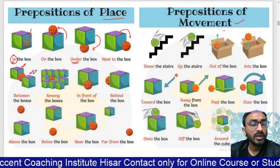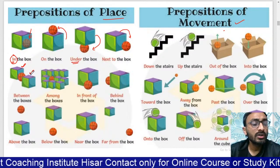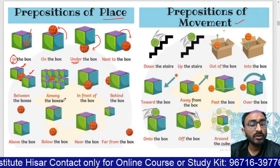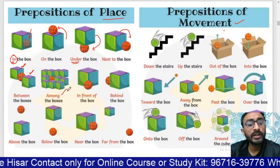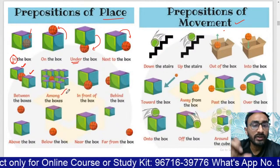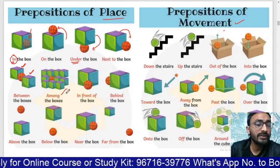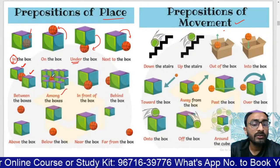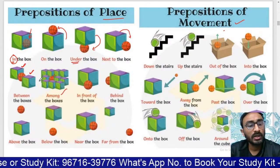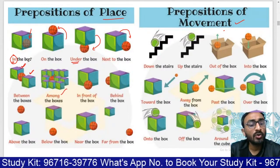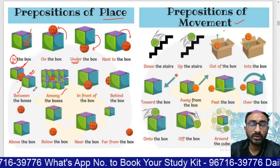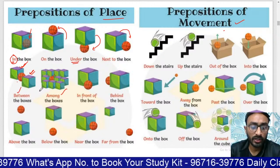'Between' is used for two things and 'among' for more than two things. If there are lots of boxes and one ball, we say 'there is one ball among these boxes.' If there are two boxes and one ball, we say 'between the boxes.'